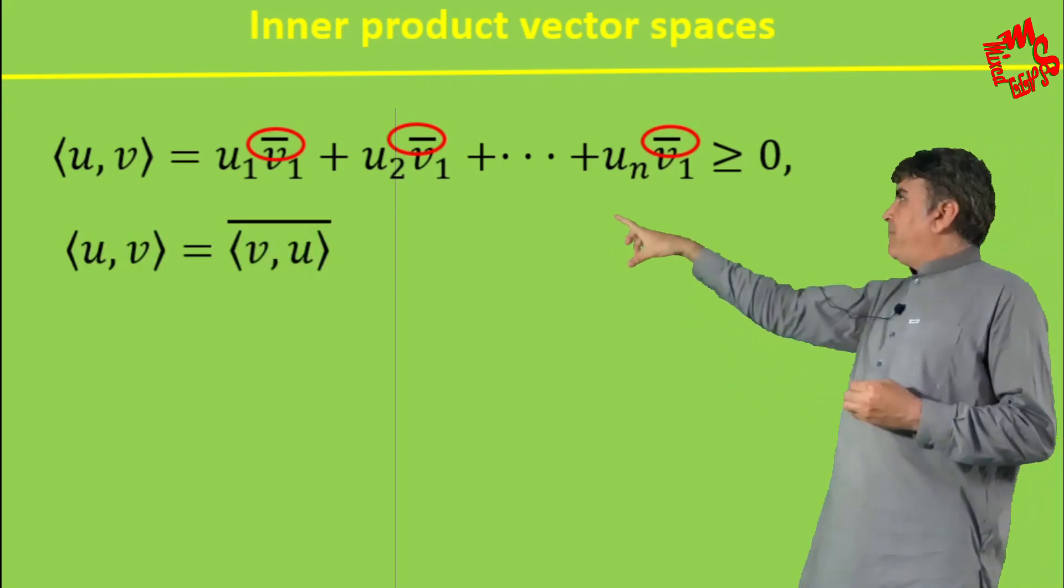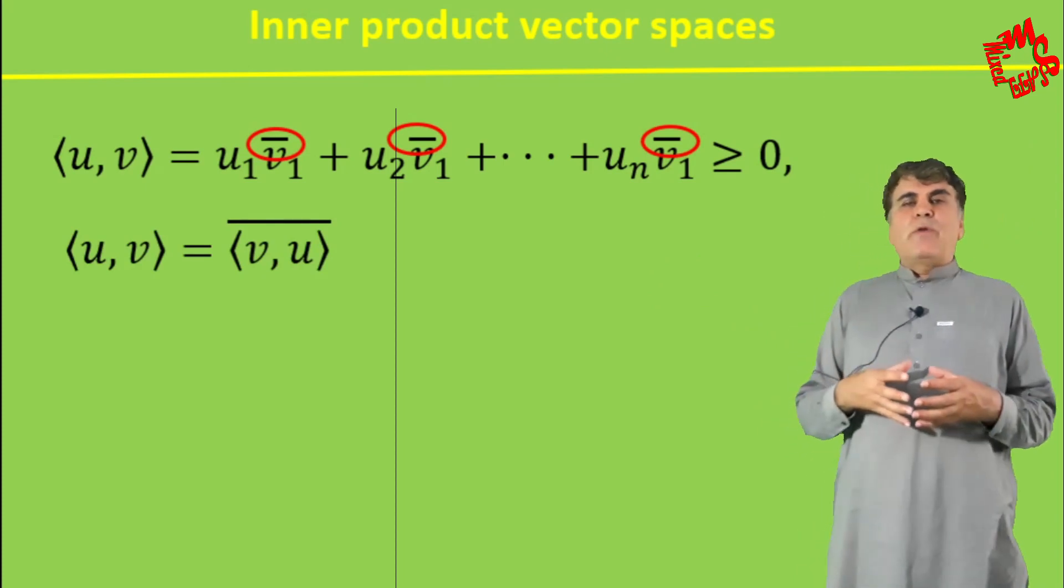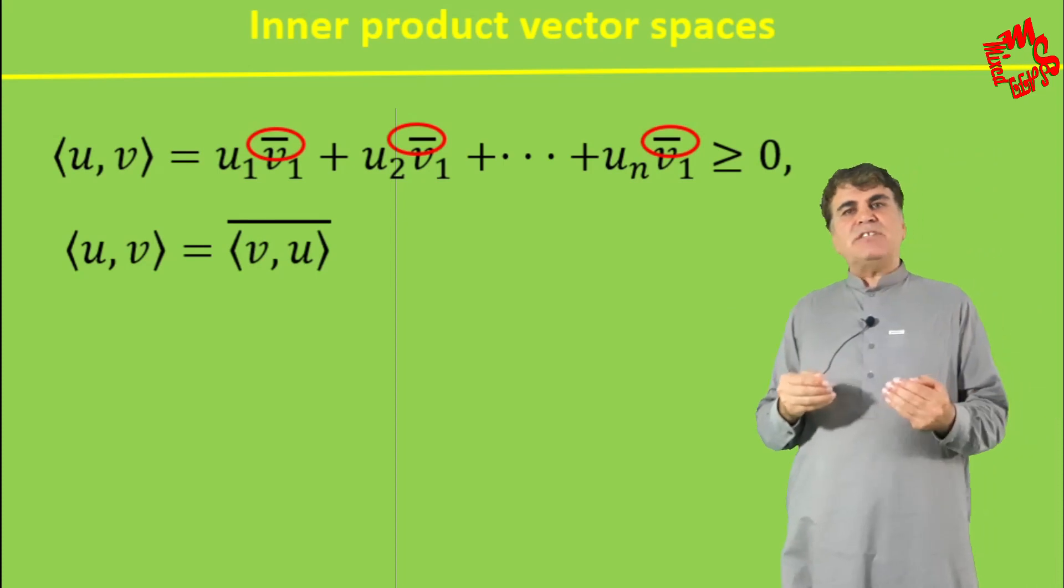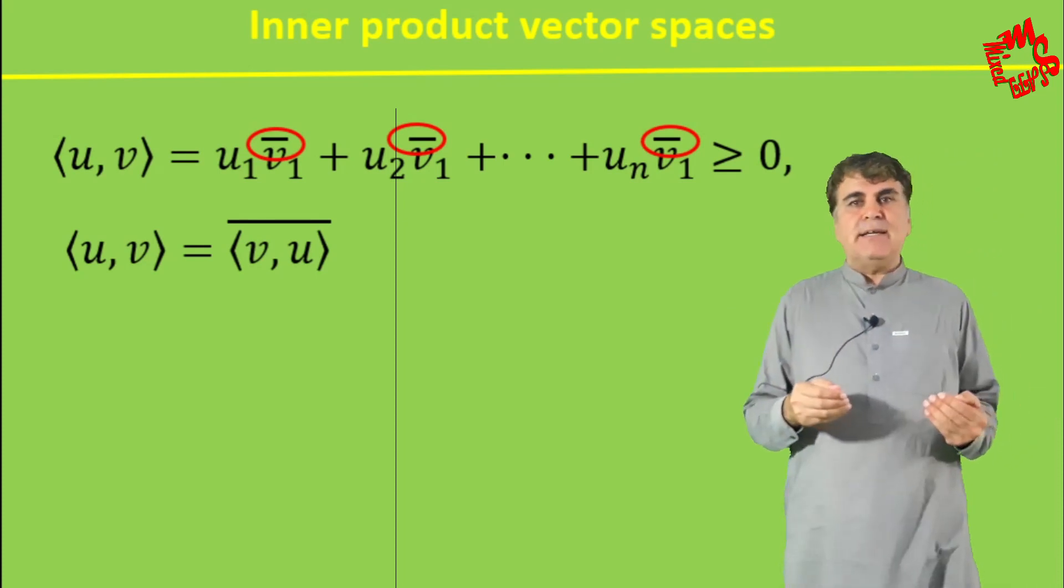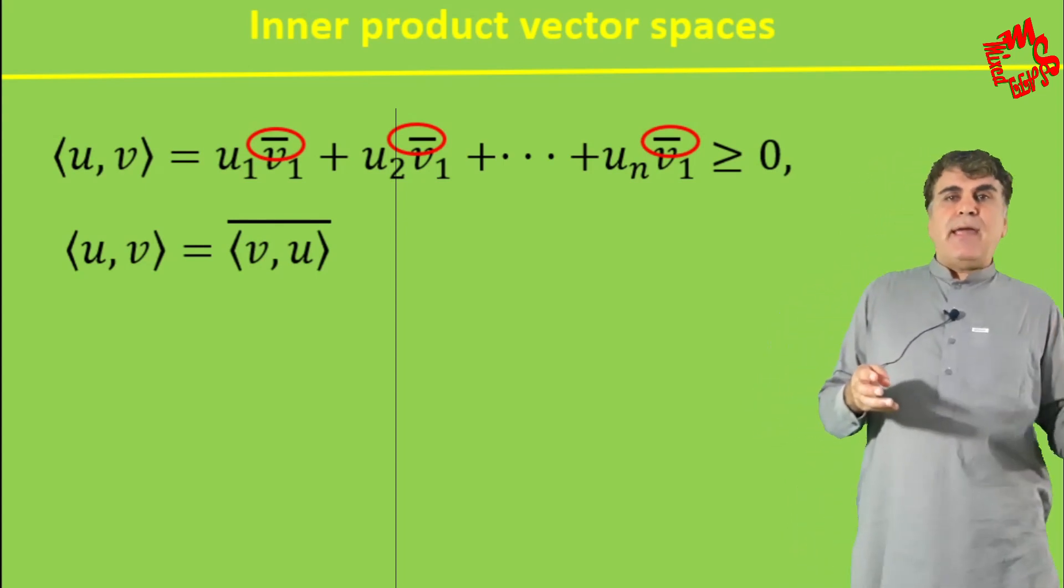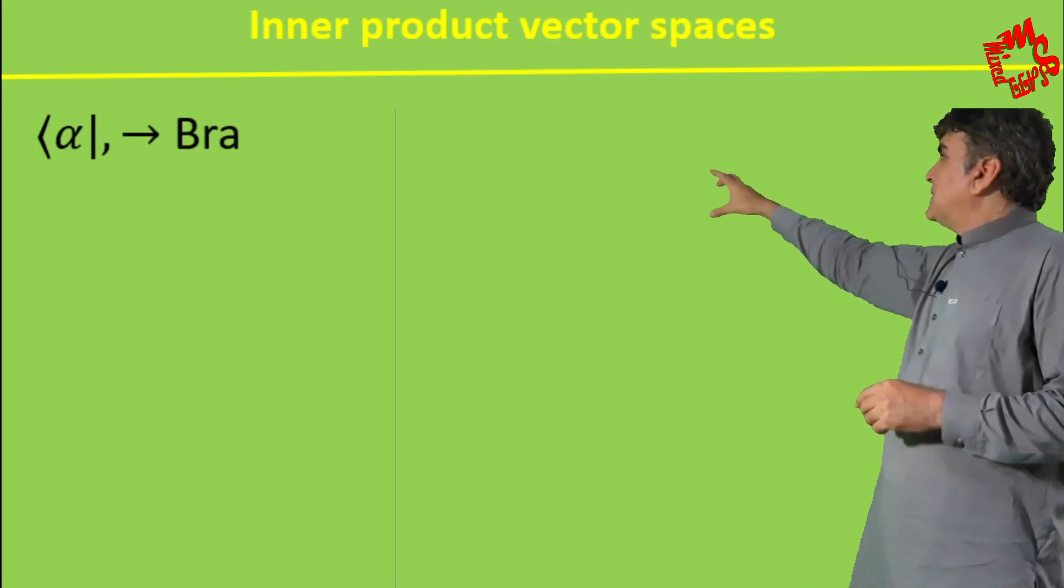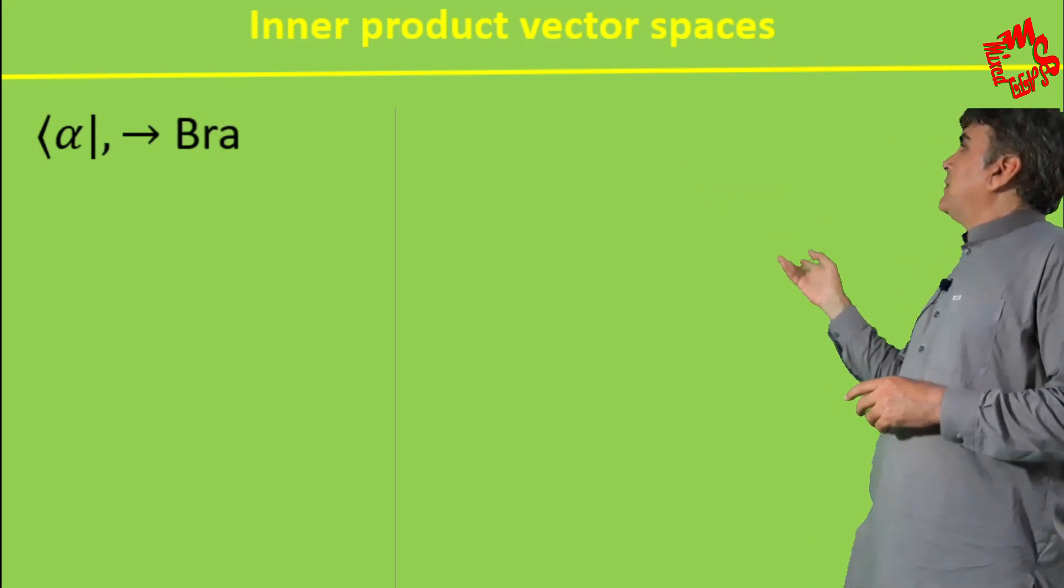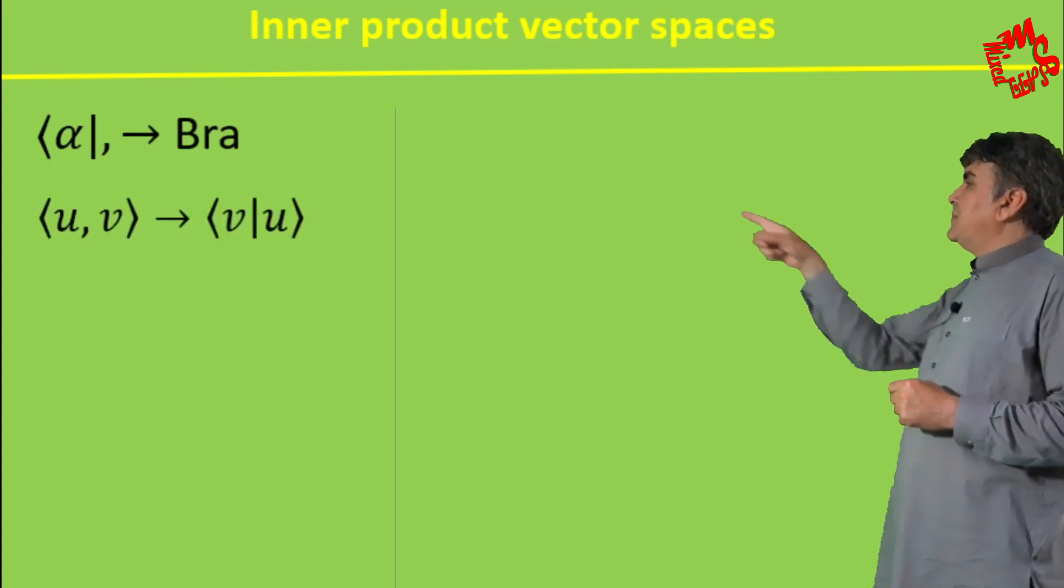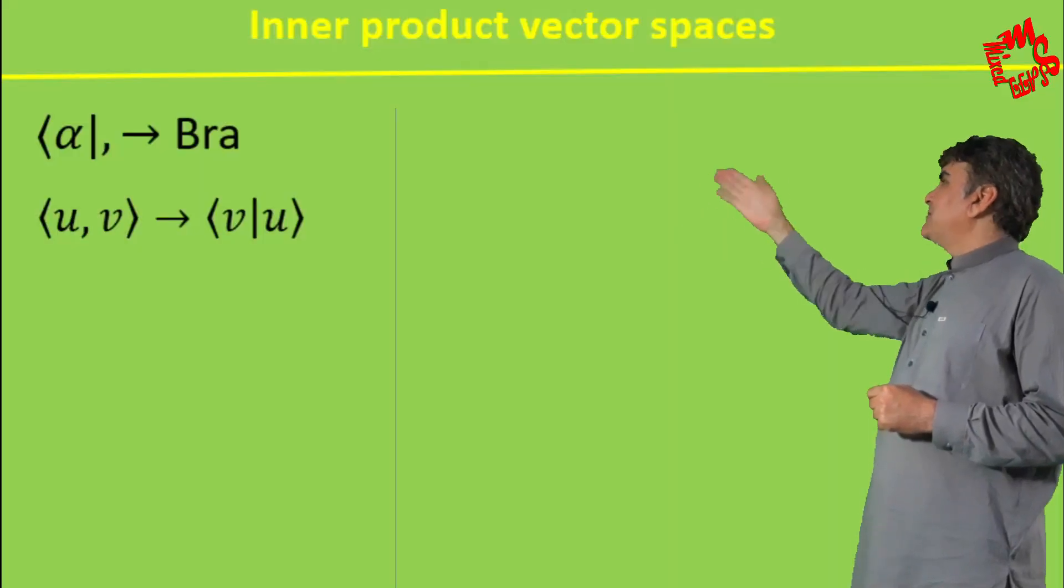So the commutative property for an inner product of the elements of vector space over the field of complex numbers is written in this form. Now again, physicists do not follow this notation of mathematicians; rather, they have their own fancy notation for the complex conjugate. This notation is in fact an inverted ket and is called a bra in the form of this, where the ket is inverted. In this notation of physicists, the inner product ⟨U,V⟩ is in fact written as bra times ket.